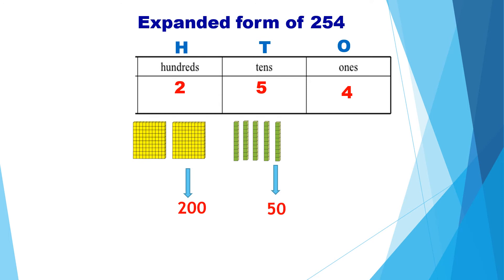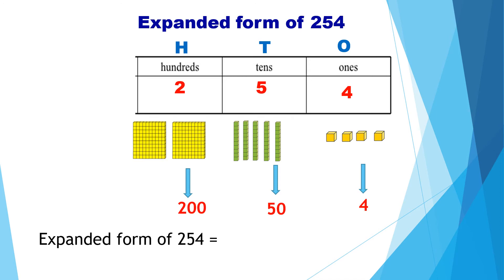Going on to ones, we have four ones — one, two, three, four. Therefore, the value of four ones is 4. Let us add these numbers now. The expanded form of 254 is 200 plus 50 plus 4.